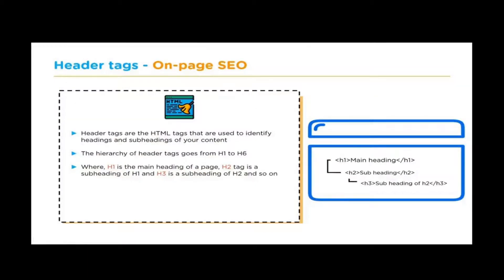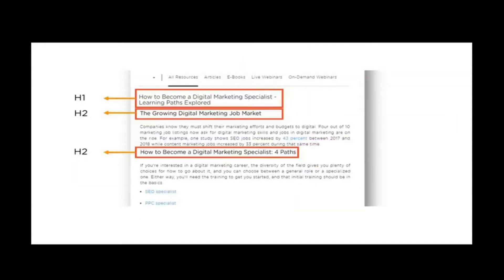Header tags are very important in website design. In web development, we have HTML, CSS, and JavaScript. HTML handles the content writing on the web page, CSS handles styling like colors, and JavaScript is the programming language. When it comes to header tags: H1 is the main heading, H2 is the sub-heading, and we have up to H5 or H6. For example, 'how to become a digital marketing specialist' would be H1, and 'digital marketing job market' would be H2.